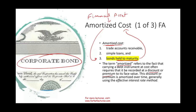Receivables are also at amortized cost, but there's usually no premium or discount because the period is so short — 30 or 60 days. For a simple loan, the same applies. So when thinking about amortized cost for a financial asset, think 'bond held to maturity.' Importantly, there are no equity securities or stocks in this category — stocks don't have a premium or discount and they don't mature.